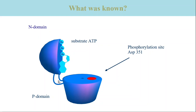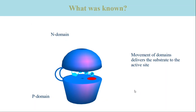So if ATP were to bind to the open conformation, the gamma phosphate would be very far from the phosphorylation site. There needs to be a conformational change to approach the gamma phosphate to the phosphorylation site. This leads to a closed conformation where the gamma phosphate is closer to the phosphorylation site.